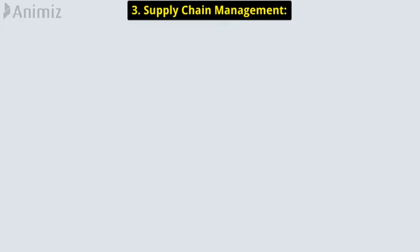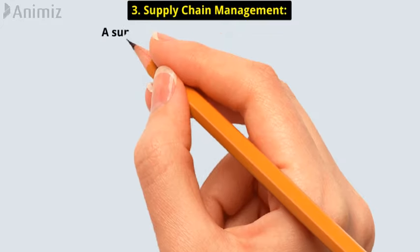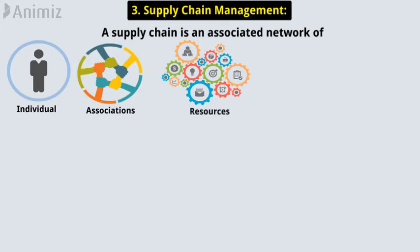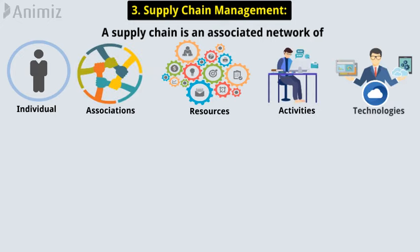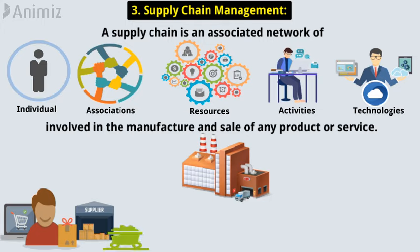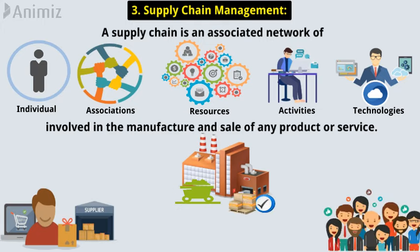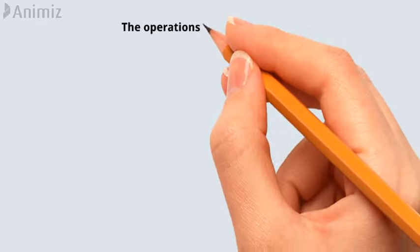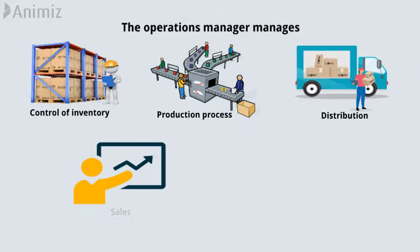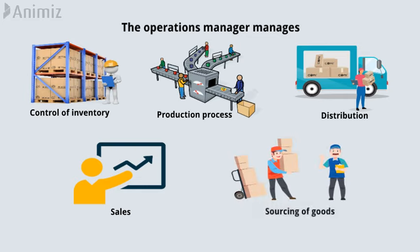3. Supply Chain Management. A supply chain is an associated network of individuals, associations, resources, activities, and technologies involved in the manufacture and sale of any product or service. A supply chain starts with the delivery of raw materials from a supplier to a manufacturer, and ends with the delivery of the completed goods or services to the customer. The operations manager manages control of inventory, the production process, distribution, sales, and sourcing of goods at acceptable prices.